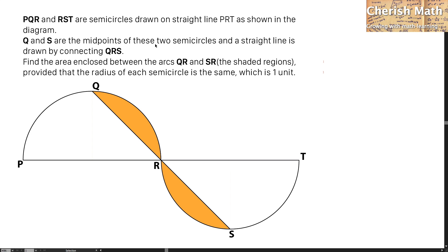Q and S are the midpoints of these two semicircles, and a straight line is drawn connecting QRS. Find the area enclosed between the arcs QR and SR, the shaded regions, provided that the radius of each semicircle is the same, which is one unit.